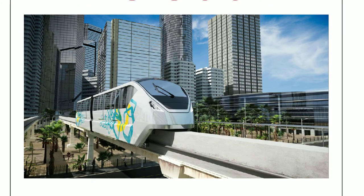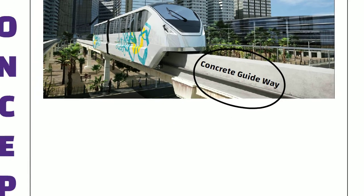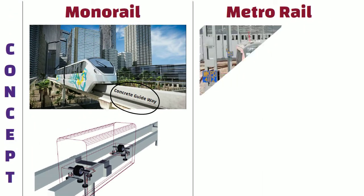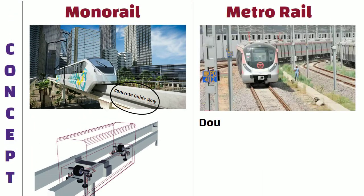As its name suggests, Monorail operates on a single beam, normally a concrete guideway, and with rubber-tired wheels. Whereas Metrorail moves on a double line track, just like other normal trains.